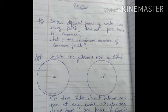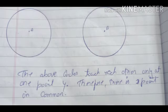The above circles do not intersect each other at any point, therefore they do not have any common points. So they do not have any common points.